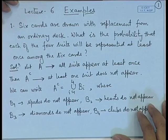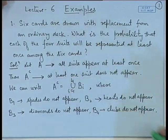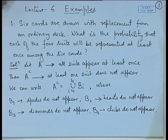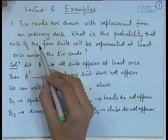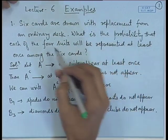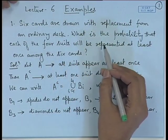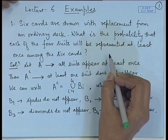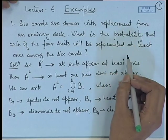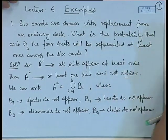Let me start with one application of the general addition rule. Consider the problem: 6 cards are drawn with replacement from an ordinary deck. What is the probability that each of the 4 suits will be represented at least once among the 6 cards?